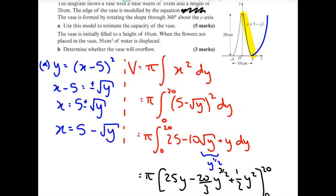The next bit then says the vase is initially filled to a height of 10 centimeters. Filled halfway up. When the flowers are placed in the vase, 50 centimeters cubed of water is displaced. Determine whether the vase will overflow. So what I want to work out is the volume of this top bit here and then compare it to 50 centimeters cubed. If it's bigger than 50 centimeters cubed, well 50 centimeters cubed can fit in there. There's no problem. If it's smaller, then we've got a problem because it's going to overflow.